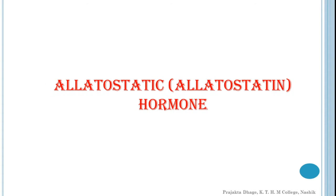The next hormone is allatostatin hormone, also called ASH. It is secreted by the cerebral neurosecretory cells, mostly the lateral neurosecretory cells, which is most commonly found in locusts. Based on studies on locusts, it is said that lateral neurosecretory cells secrete this particular hormone.